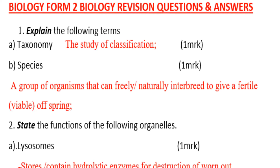Question number one: explain the following terms. Taxonomy is the study of classification. Species is a group of organisms that can freely and naturally interbreed to give a fertile or viable offspring.